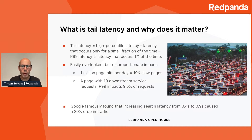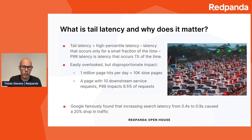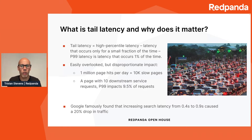If you've got a user-facing page that has a million hits per day, then that's 10,000 slow pages per day. But even if you've got a page that composes maybe 10 downstream services, then p99 suddenly impacts nine and a half percent of your requests — pretty much one in 10. Latency really matters to consumers, particularly when people's attention spans are getting shorter and shorter. If a page doesn't respond in less than a second, there's a decent chance that customer is going to be lost.